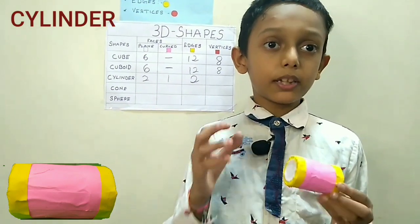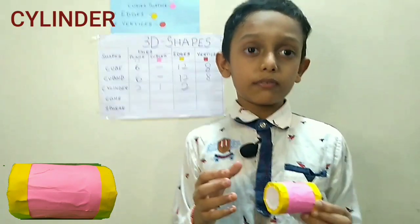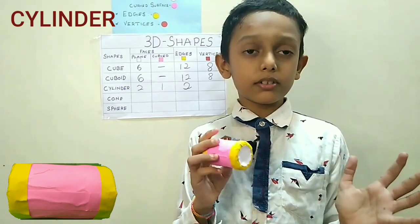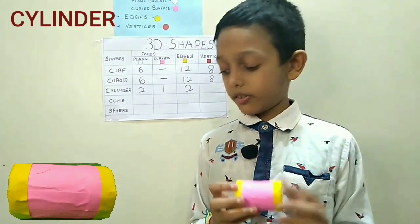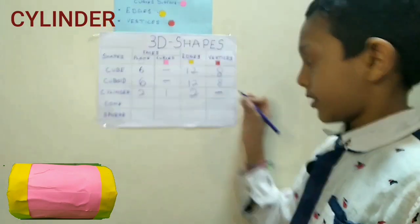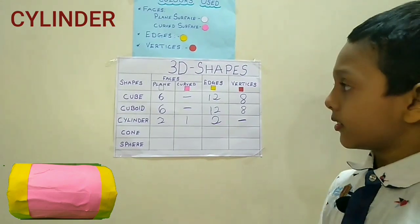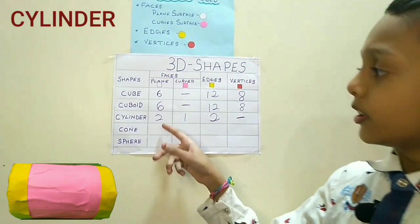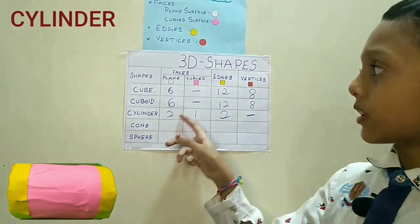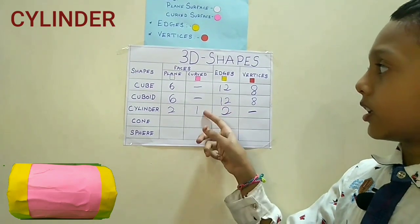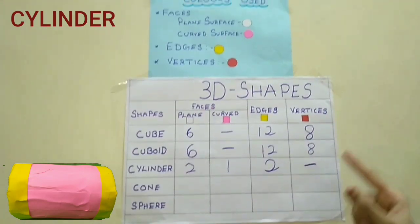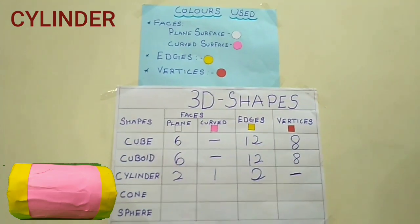Now let's count the vertices of the cylinder. So there are no vertices in the cylinder.